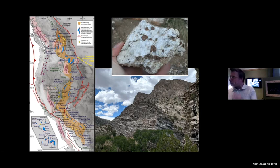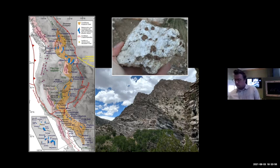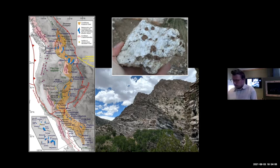A few interesting things: these rocks dominantly occur within what we call the hinterland of the orogen — the core of the mountain belt, behind the Sevier thrust belt, which is the frontal deformation front. You can see the orange belt dominantly occurs behind the red thrust-front line. Another important thing is they dominantly occur associated with metamorphic core complexes, which I'll talk about in a moment. There's a close association between the two.